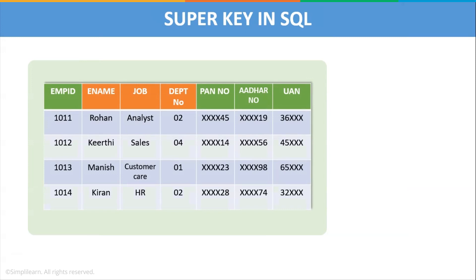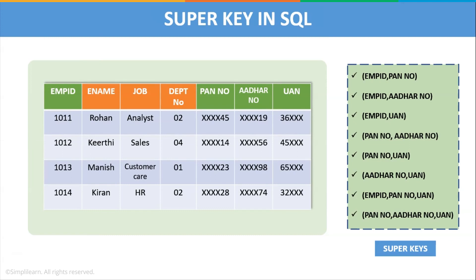Consider the employee table. The possible super keys are: employee ID + PAN number, employee ID + Aadhaar number, employee ID + UAN, PAN number + Aadhaar number, PAN number + UAN, Aadhaar number + UAN, employee ID + PAN number + UAN, and PAN number + Aadhaar number + UAN. All of these keys are able to uniquely identify each row, so each is a super key. However, not all of them can become a candidate key — only those super keys with no redundant attribute become candidate keys. For example, employee ID + PAN number cannot be a candidate key because when we take the subset, both employee ID and PAN number individually are candidate keys, making this key non-minimal.